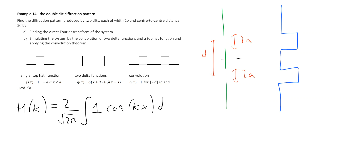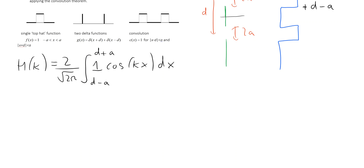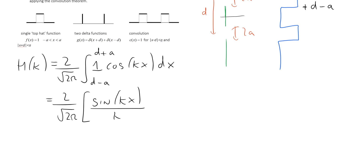We just need to think about the limits of the integral. The bottom of one slit is d minus a and the top is d plus a, so those are the two limits. We integrate from d minus a to d plus a. This is a relatively easy integral: we get 2 over the square root of 2π, and the cosine integrates to sine(kx) over k, evaluated between d minus a and d plus a.